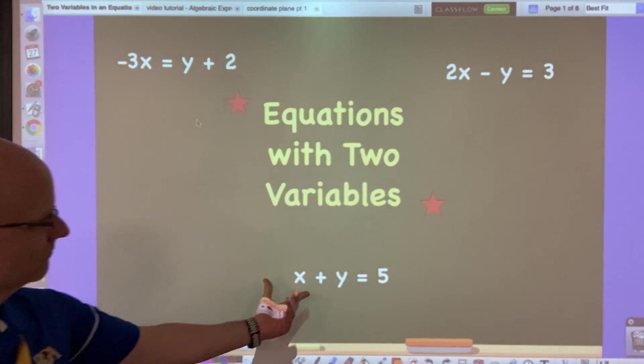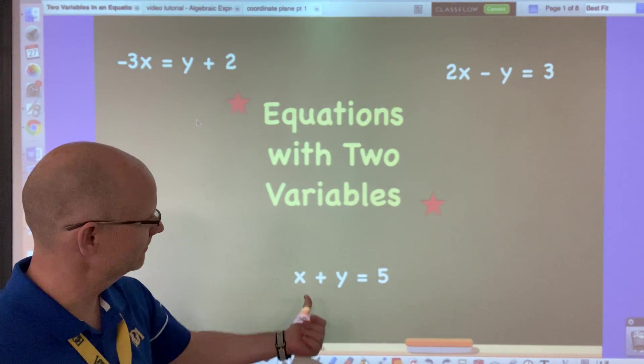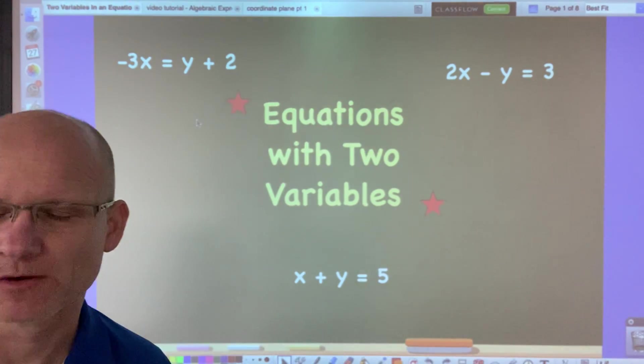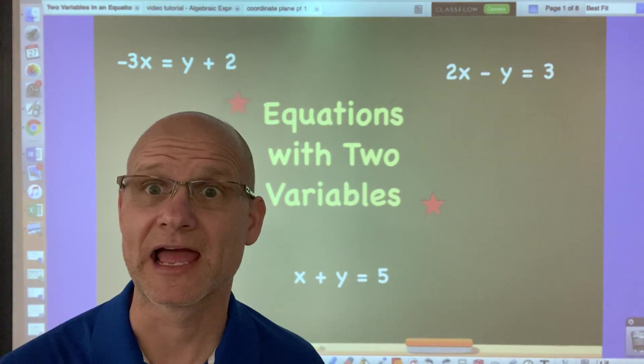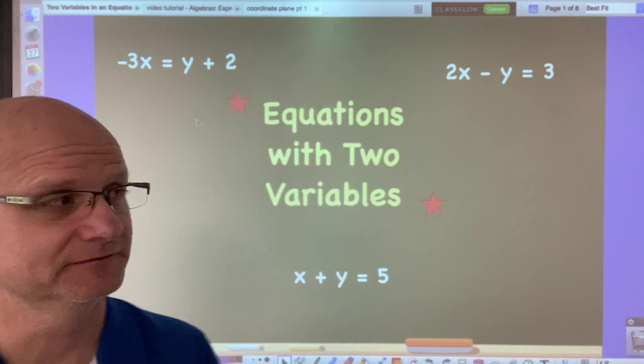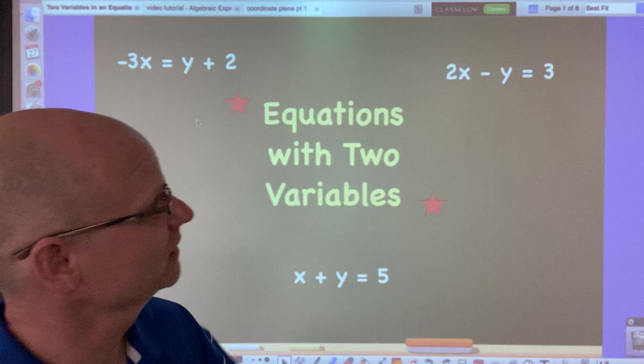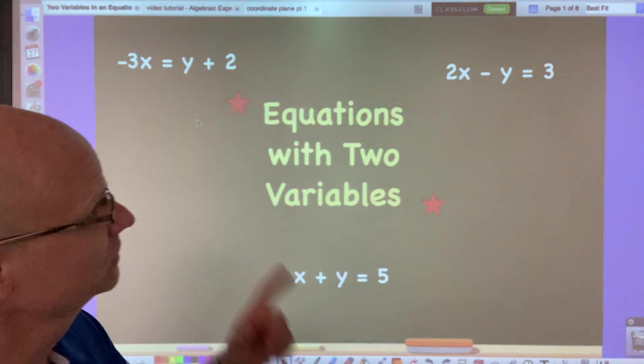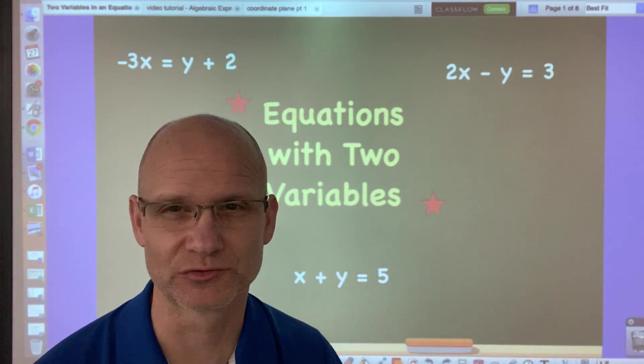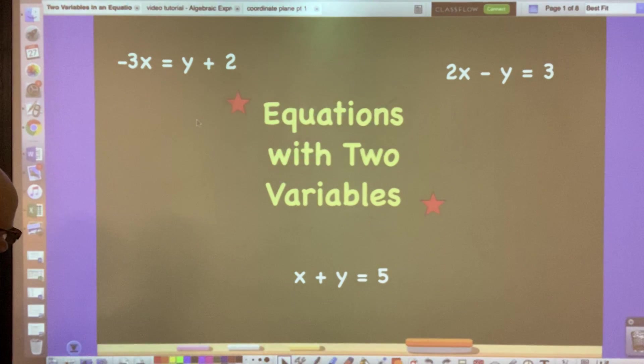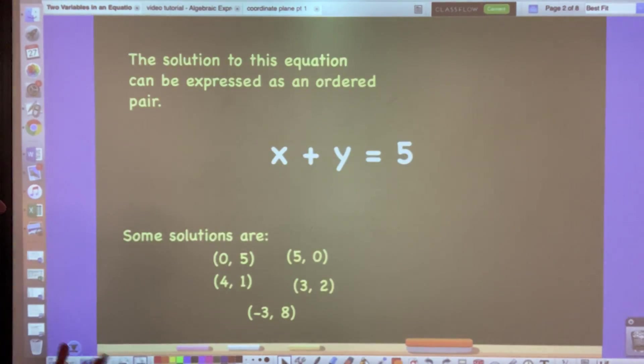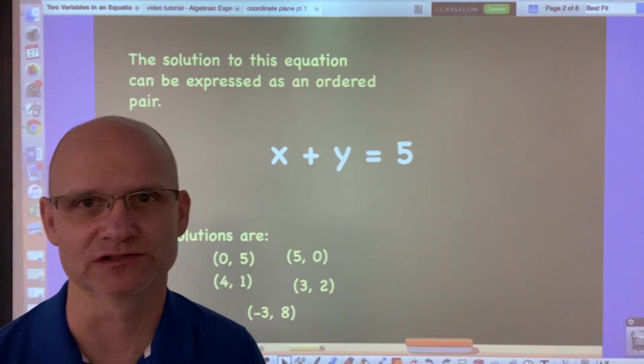Notice right down here below the topic it says x + y = 5. Above it we have -3x = y + 2 as well as another equation with two variables, 2x - y = 3. So we're going to just talk about first of all solutions to these equations.